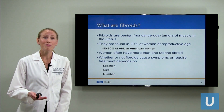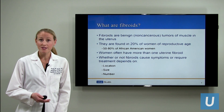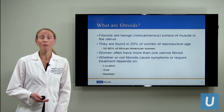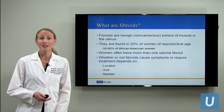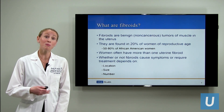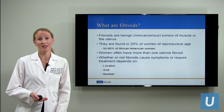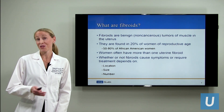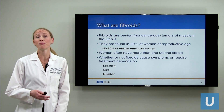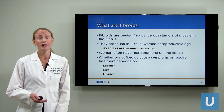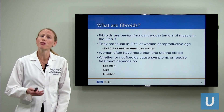Fibroids are benign, meaning non-cancerous tumors that arise from the wall of the uterus. They are surprisingly common — up to 20% of women of reproductive age will have fibroids. In some populations they may be more common; up to 50 to 80% of African-American women have fibroids. Where there is one fibroid, there are often many. Whether or not a fibroid poses an issue in terms of symptoms or a desire to conceive really depends upon three factors.